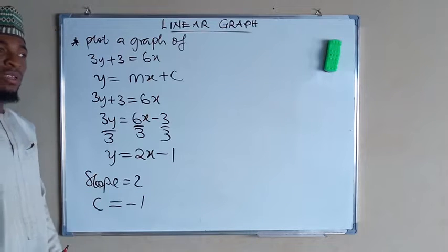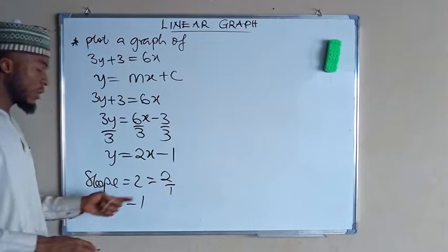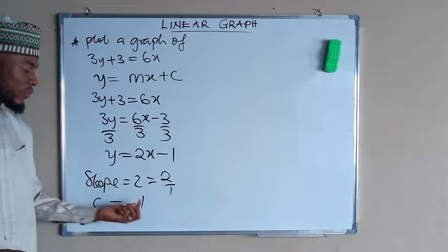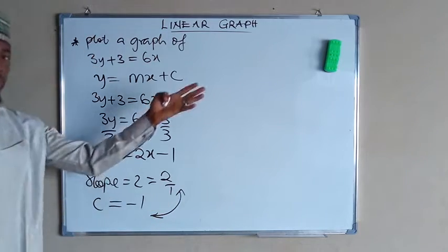But remember, slope is always a ratio. So it is going to be 2 divided by 1, and 2 divided by 1 is the same thing as 2. So these are the two terms we need in order to plot our graph.